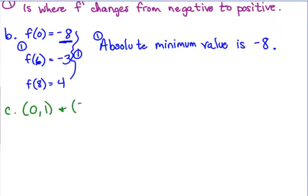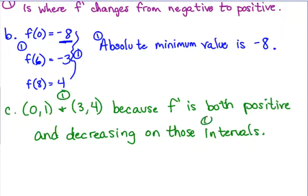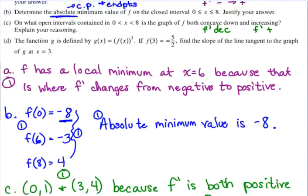The intervals are 0 to 1 and 3 to 4 because f prime is both positive and decreasing on those intervals. So you get one point for your answer and you get one point for your explanation. Make sure that your explanation, I know that I wrote it up here in the question stem, but make sure that your explanation actually makes it into your sentence. There's nothing wrong with writing it up here below the question. Now on the AP exam, they won't have A, B, C, and D this close to each other. They'll have them spaced out like they'll have A and you'll have your space to work. They'll have B and your space to work. So anything that you write right below the question will be closer to your answer, but you still have to make sure that you include it in your answer.